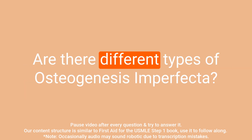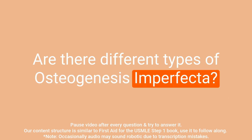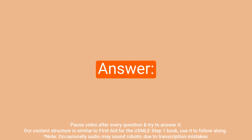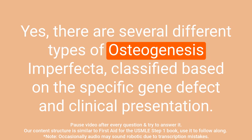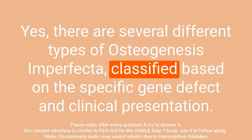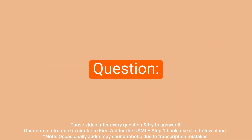Question: Are there different types of osteogenesis imperfecta? Answer: Yes, there are several different types of osteogenesis imperfecta, classified based on the specific gene defect and clinical presentation.